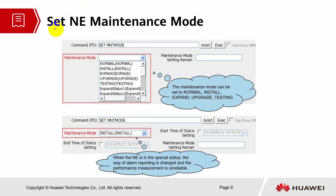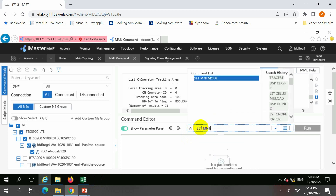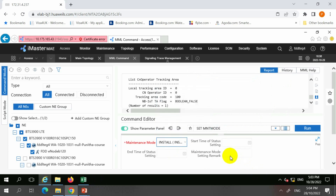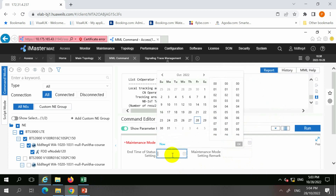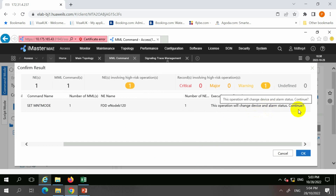Next we'll look at how to set NE maintenance mode. We have to switch from normal mode to engineering mode. Engineering mode can be install, expand, upgrade, testing, and so on. When the NE is in special status, the way of alarm reporting will change — performance management is unreliable because it will move to engineering mode. Let's look at the list maintenance mode from our example. When setting, you have to set accordingly — for example, switch to install and set a specific start time and end time. When set to maintenance mode, it will change the device and alarm status.